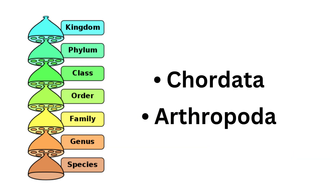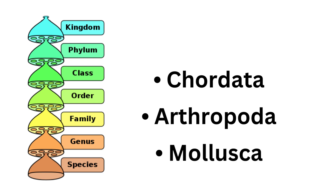Other major groups are Arthropoda, which includes insects and crustacea, and Mollusca, which includes animals like snails, slugs, clams, mussels, and oysters.